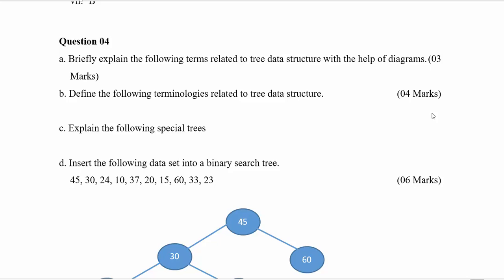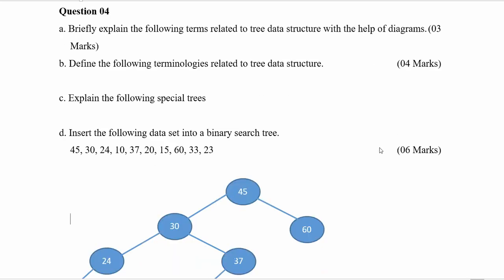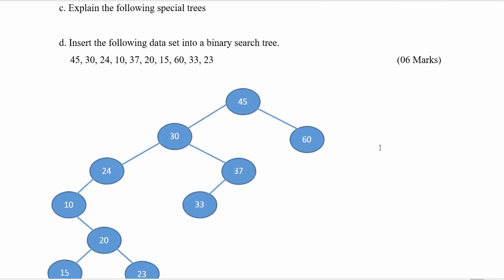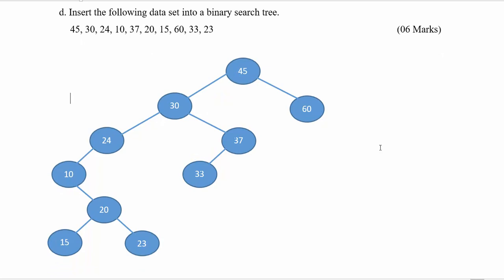In this question, parts A, B, C, and E are similar to the question we discussed in the previous video, so I'm not going to explain those in this video. I'm moving into part D. In part D, you have to create a binary search tree and insert this set of data: 45, 30, 24, 10, 37, 20, 15, 60, 33, and 23 — in this given order.